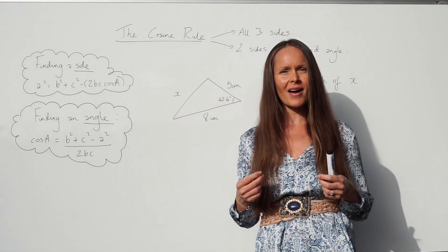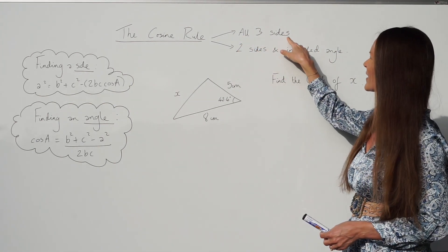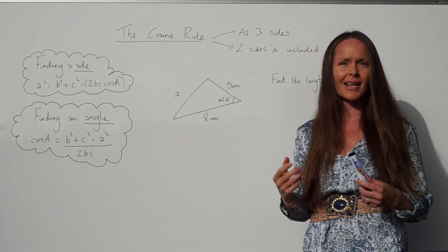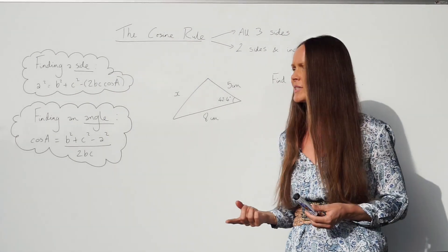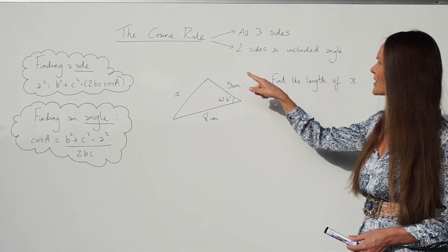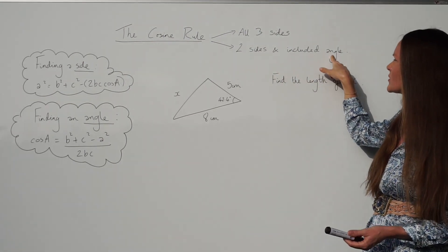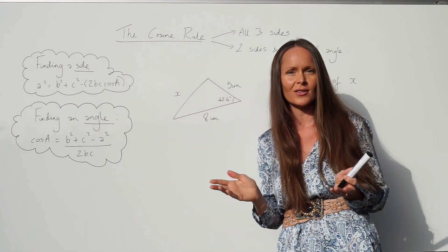We can use it to find the angle in a triangle but we must know all three sides of that triangle to be able to find the angle. Or we can use it to find the length of a side in a triangle, but if you're using it to find the length of a side you must know the lengths of the two other sides and the included angle. So the angle that's included is just the angle in between the two sides that you know.